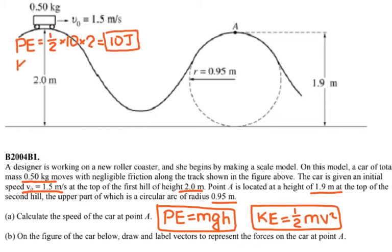The kinetic energy at the top of the first hill, the formula I wrote for you at the bottom, is one-half mv squared. So it's one-half, the mass is 0.5, and v squared is 1.5 squared.